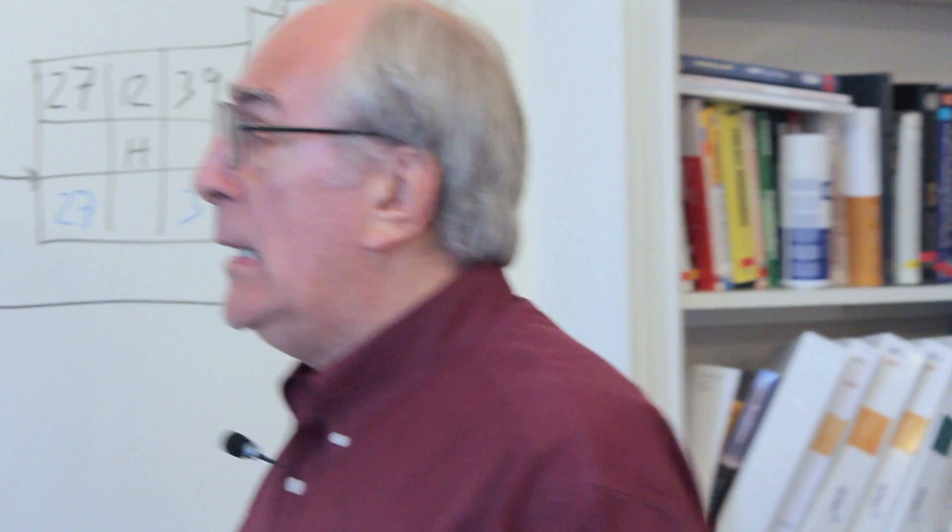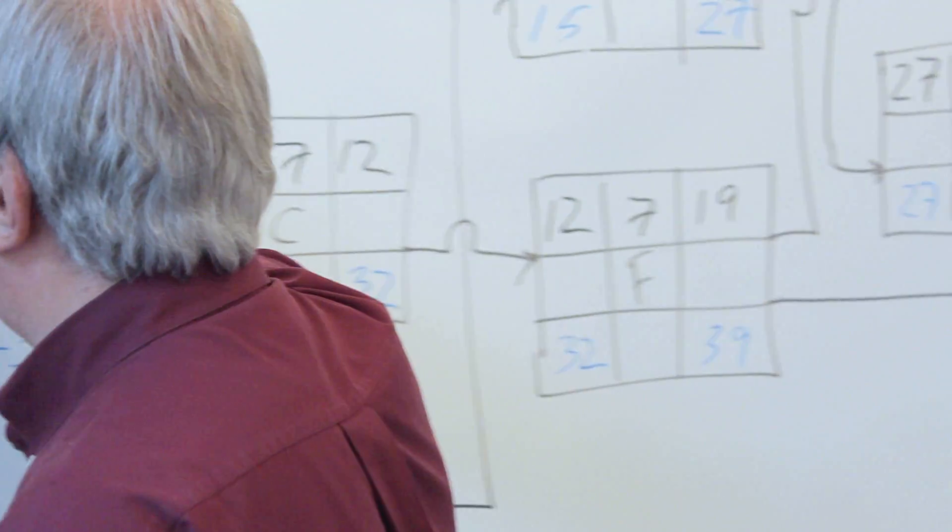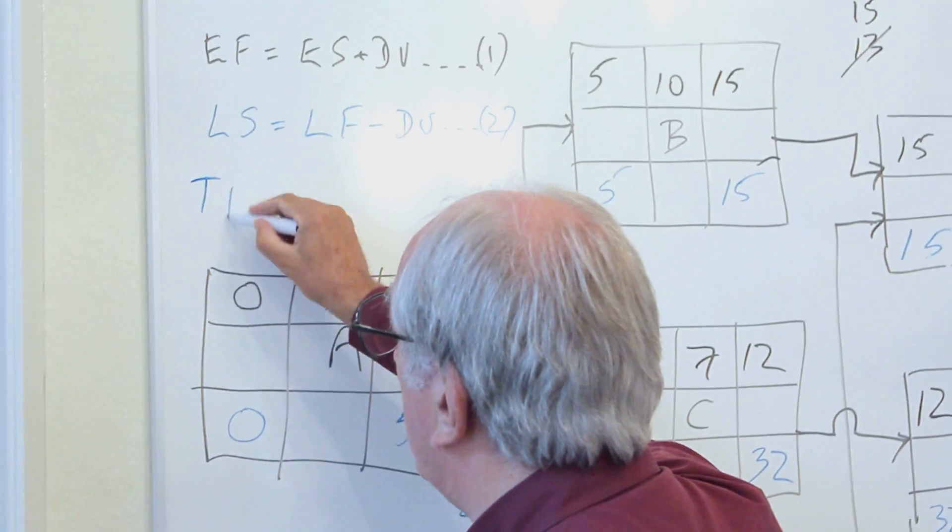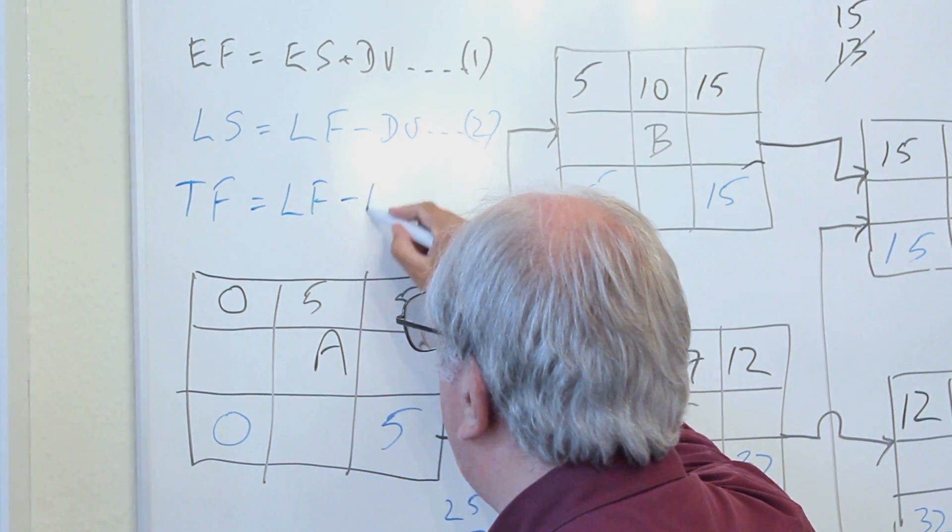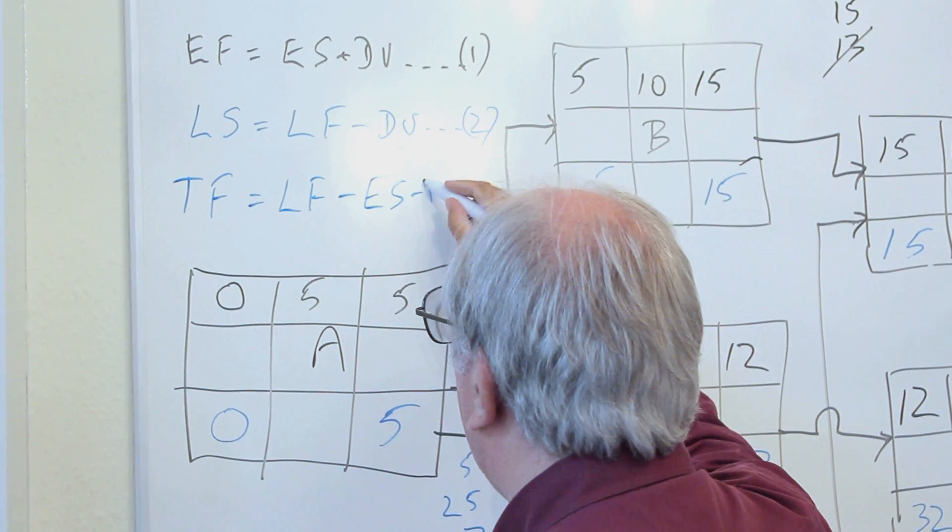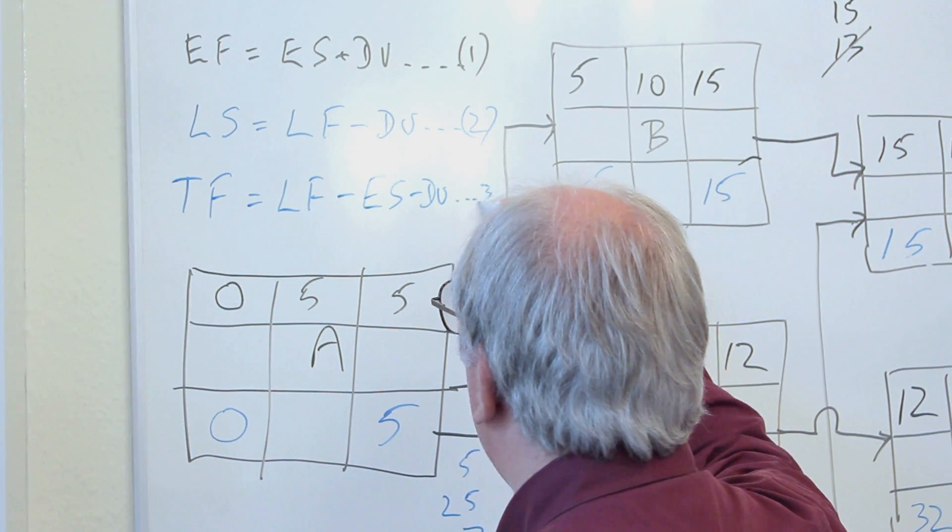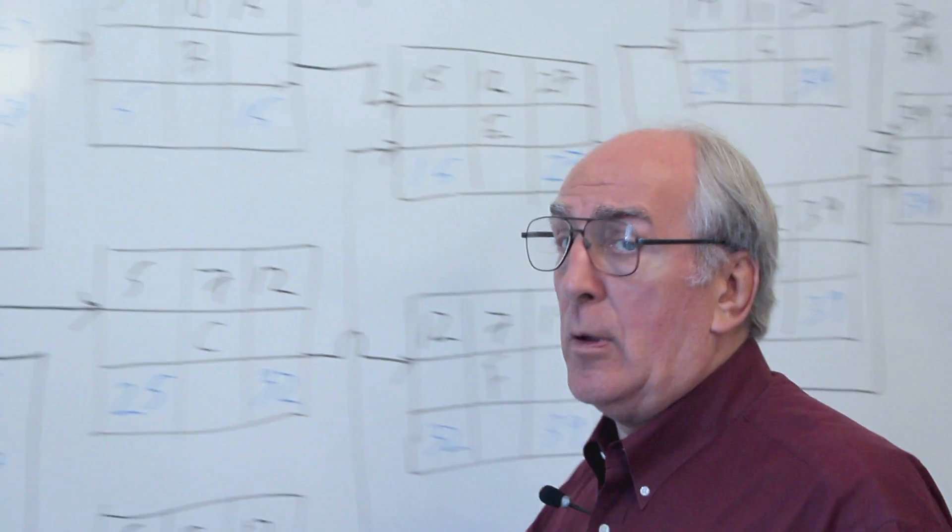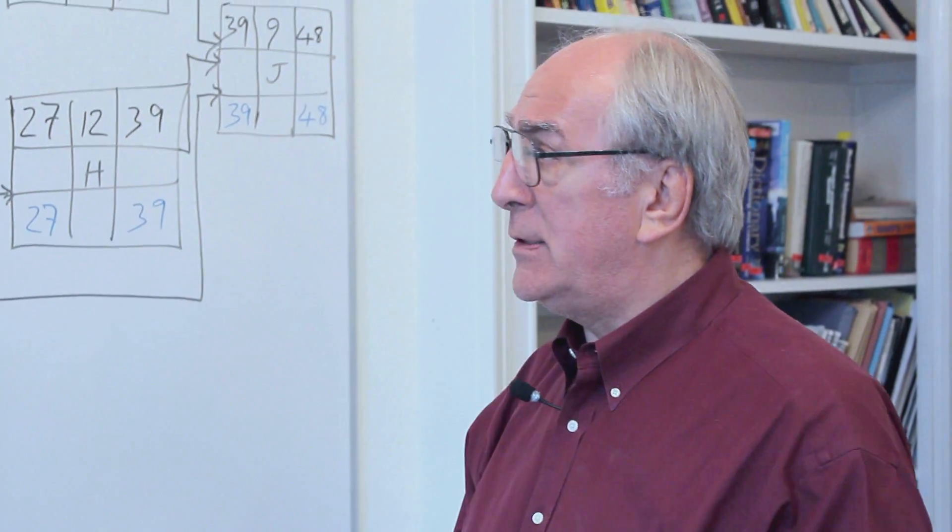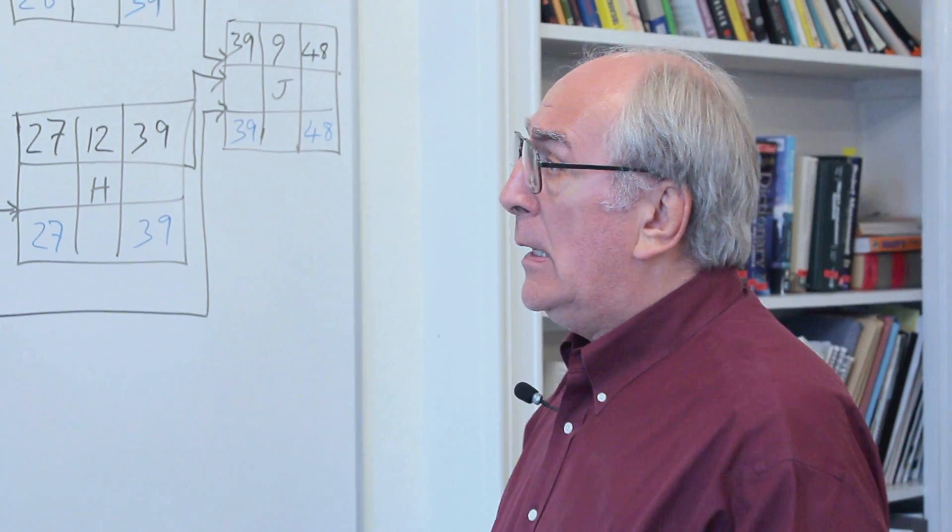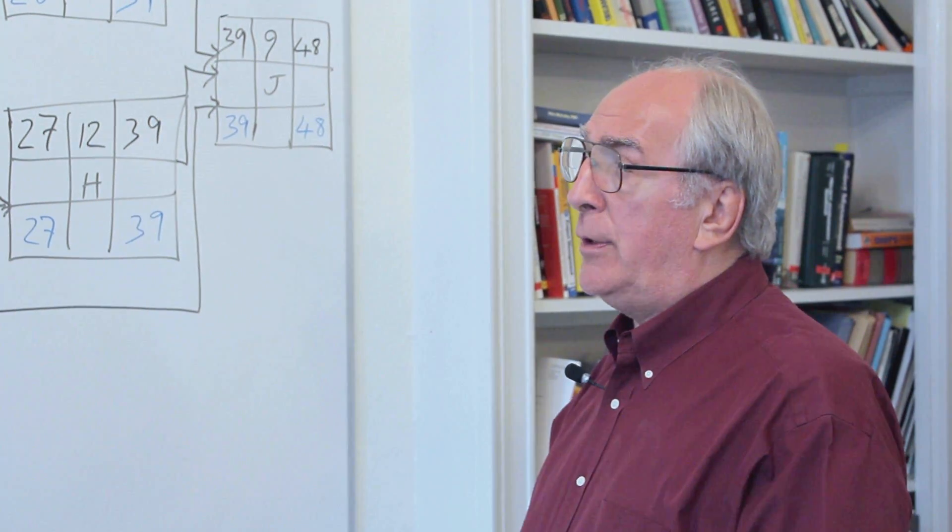And the equation that does that for looking at what is known as the total float looks like this: you take the total float on activity A, late finish minus the early start. We'll call it DF and that equals the late finish minus the early start minus the duration. And there's our equation three that works all the time, that works all the time for all the different types of conditions that you can get.